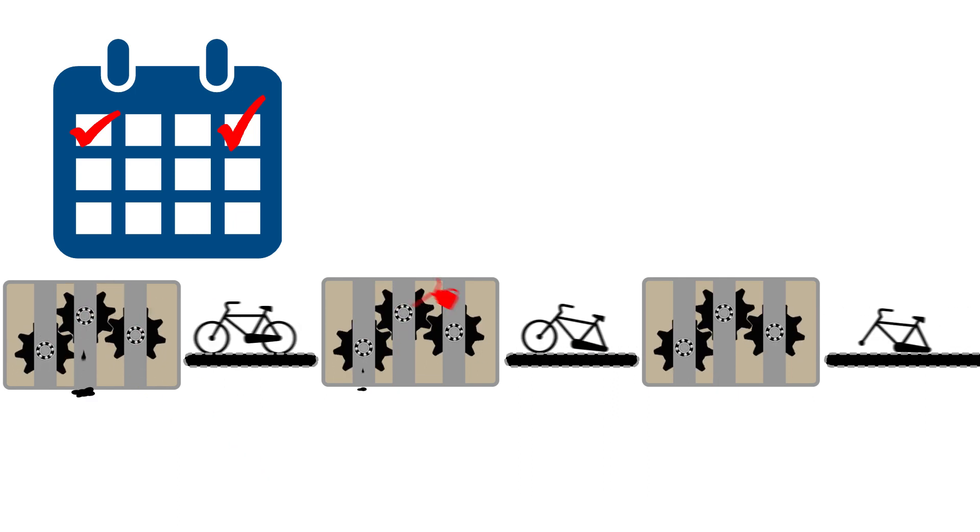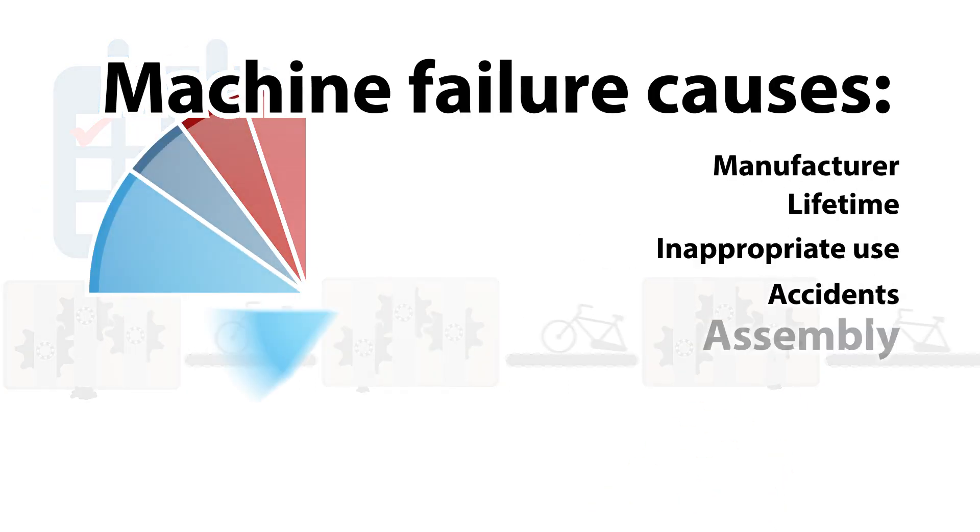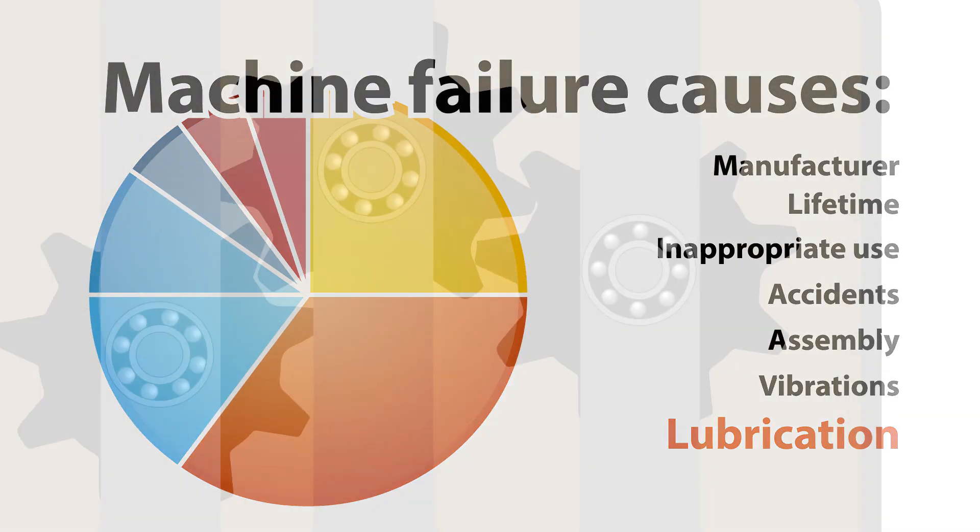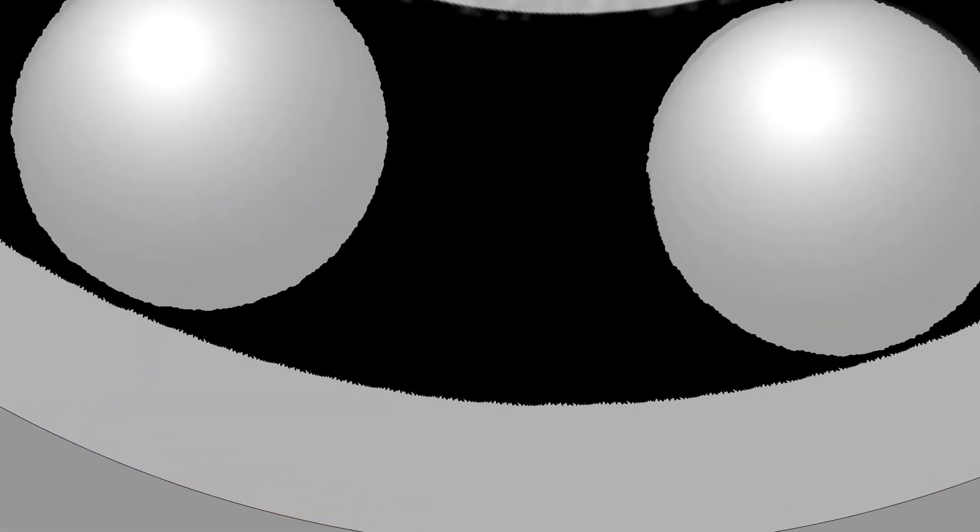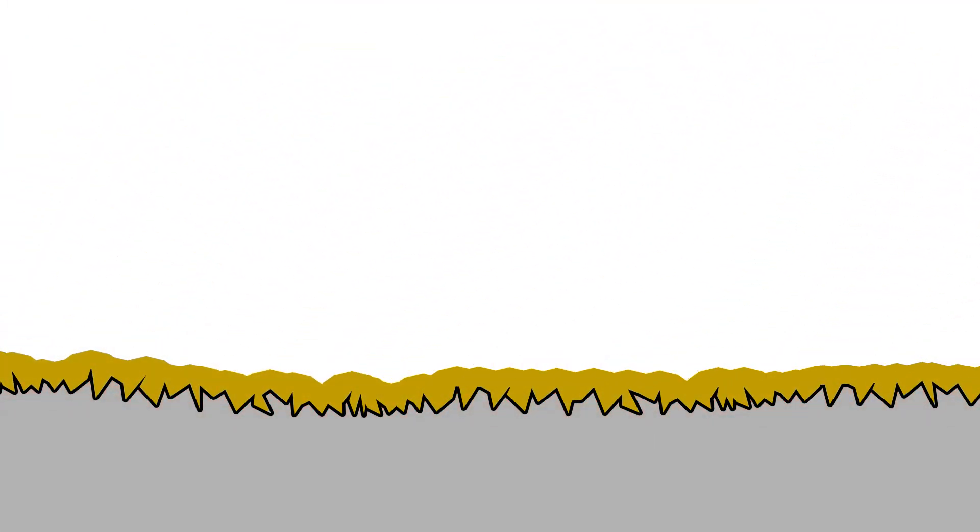Major bearing manufacturers claim that incorrect lubrication practices decrease the longevity of bearings by as much as 40%. Grease serves a simple purpose: to reduce friction and dissipate heat.